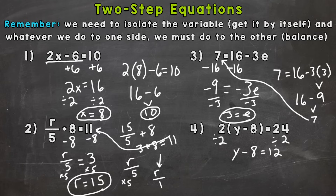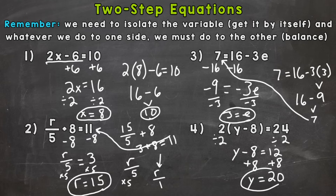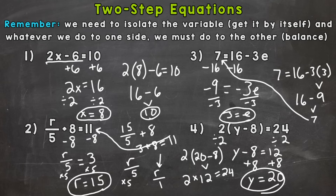Now we have y minus 8 equals 12. We need to get rid of that minus 8 to isolate y, so we add 8 to both sides. Minus 8 plus 8 gives us 0 — those cancel out — and we're left with y. 12 plus 8 gives us 20, so y equals 20. Let's plug it back in: 20 minus 8 is 12, bring down the 2 outside the parentheses, and 2 times 12 does give us that 24 we wanted.